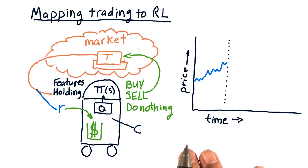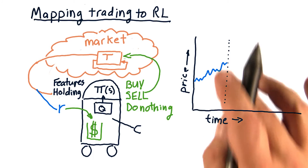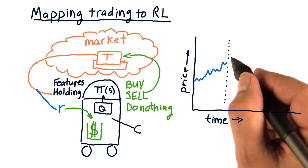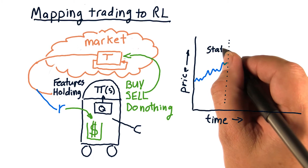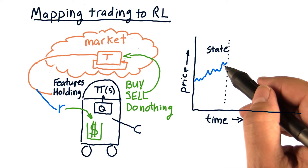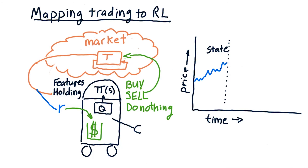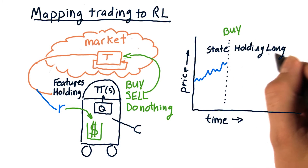Let's think about this in the context of trying to learn how to trade a particular stock. We've got this historical time series, and let's say this vertical line is today. We can look back over time to infer the state of the stock — things like Bollinger Band values. We process that and decide on our action. Let's suppose we decide to buy, so we're now holding long. That's part of our state.